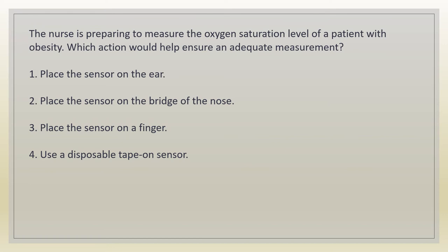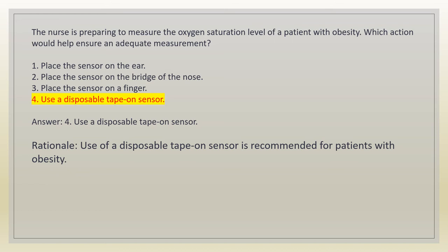The nurse is preparing to measure the oxygen saturation level of a patient with obesity. Which action would help ensure an adequate measurement? 1. Place the sensor on the ear. 2. Place the sensor on the bridge of the nose. 3. Place the sensor on a finger. 4. Use a disposable tape-on sensor. Answer: 4. Use a disposable tape-on sensor. Rationale: use of a disposable tape-on sensor is recommended for patients with obesity.